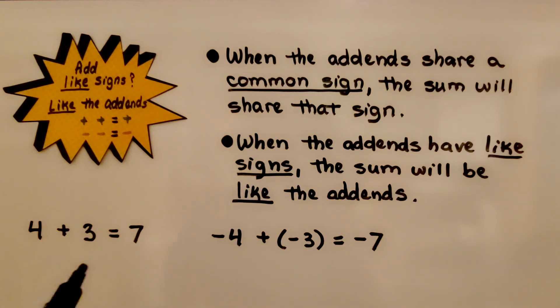We have a positive four and a positive three. Our sum is going to be a positive seven. If we have a negative four and a negative three, adding them together, the sum will be a negative seven.